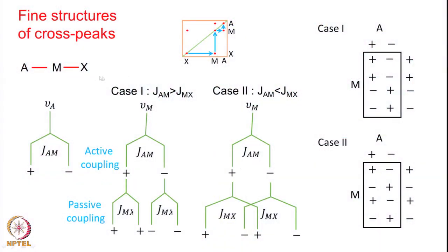Taking the linear spin system again - depending upon the relative magnitude of the coupling constants, we have two situations: Case 1 where JAM is larger than JMX, and Case 2 where JAM is smaller than JMX. Looking at the AM cross peak where A is along F2 and M is along F1: the A spin chemical shift, when split by the active JAM coupling, produces a plus-minus pattern. Since there is no other coupling to A, that is all for the A spin dimension. The M spin has the active JAM coupling producing plus-minus, and the passive JMX coupling which produces plus-plus splitting of the plus and minus-minus splitting of the minus.